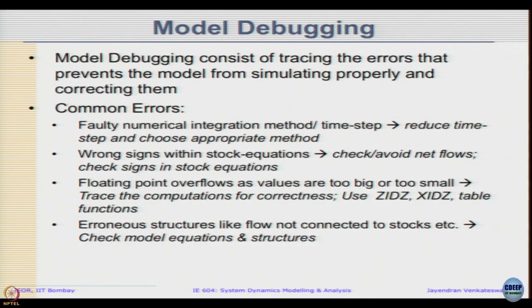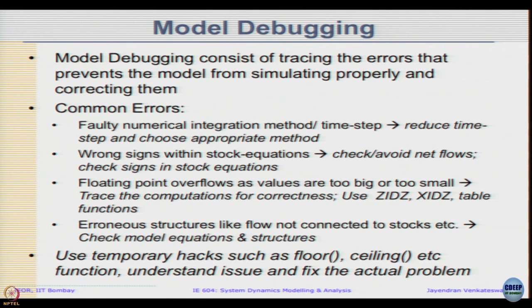There are two types of errors: one is a warning that computation is beyond the table function, meaning extrapolation is occurring — in some cases that may be okay. The other is floating point errors where you are actually dividing by zero or getting large values due to errors in computation, which need to be fixed. There could also be errors in the structure itself, such as flows not connected to stocks or incorrect drawings — for these you need to check the model equations and structure directly. Temporary hacks like floor or ceiling functions can help isolate sub-model issues.